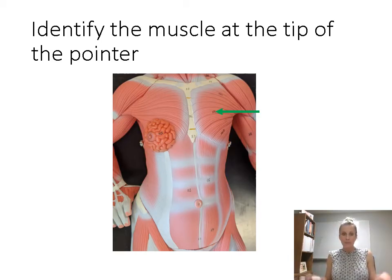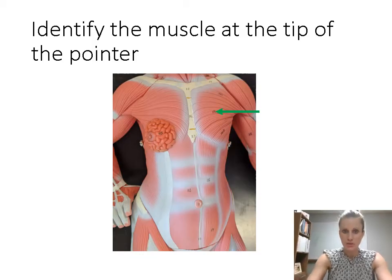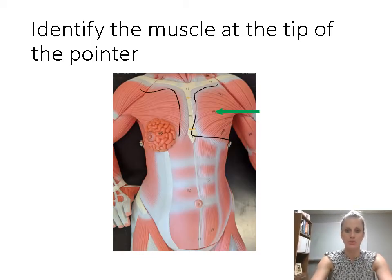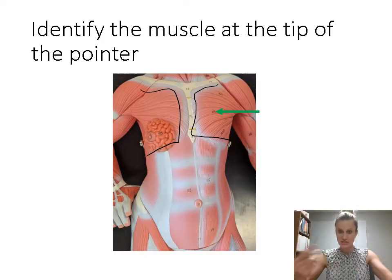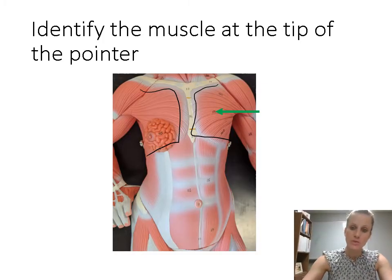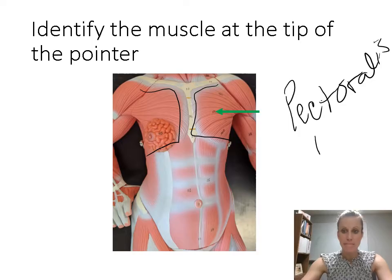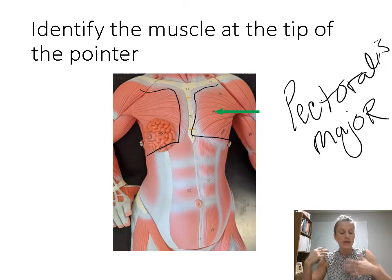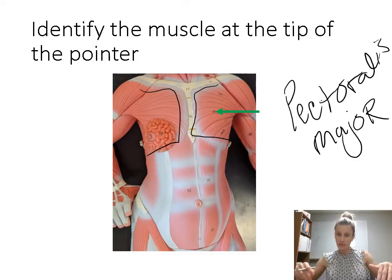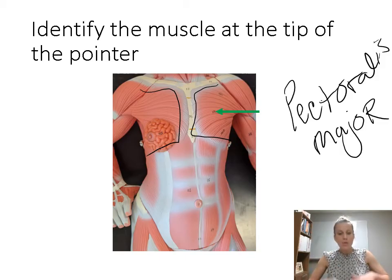Here we see the superficial muscles of the front of the trunk. This is pointing to the superficial muscle of the pectoral region — the chest region. This muscle is named pectoralis major. When people work out their pecs, they're working out these chest muscles. Pectoralis major is the large pectoral muscle; we'll see pectoralis minor in a second — it's the smaller one underneath.